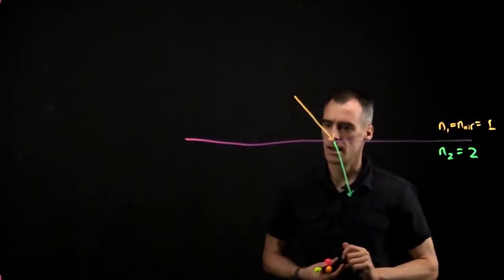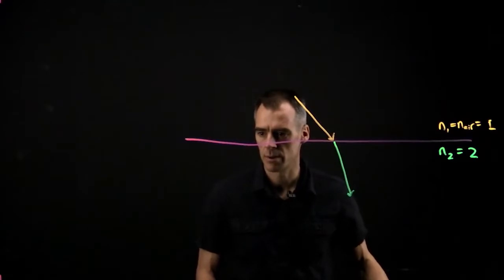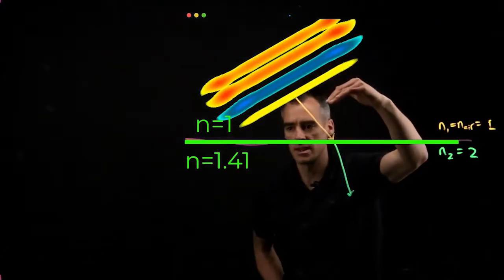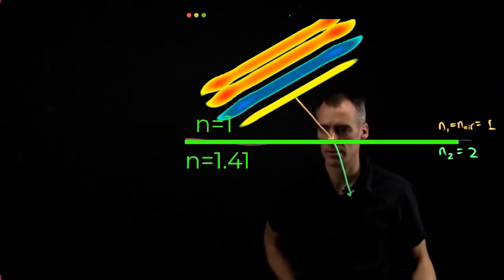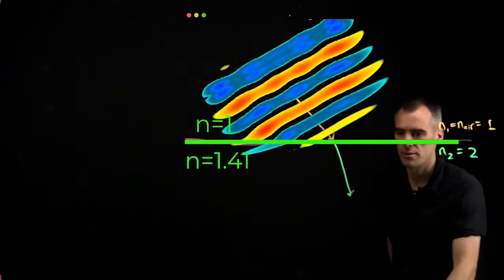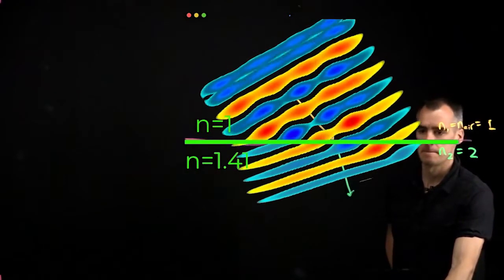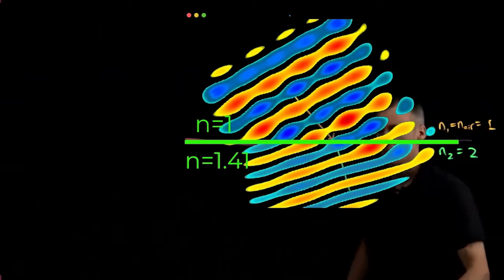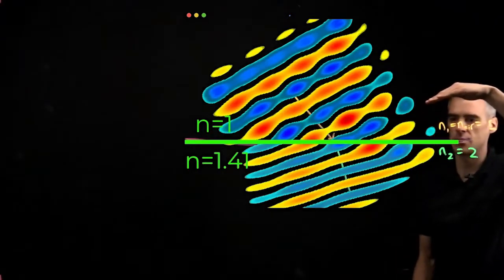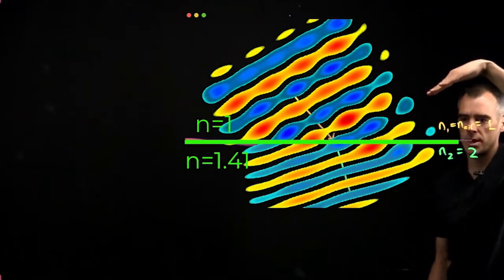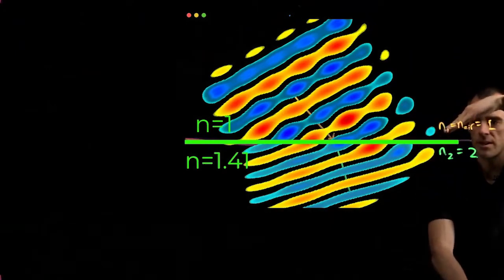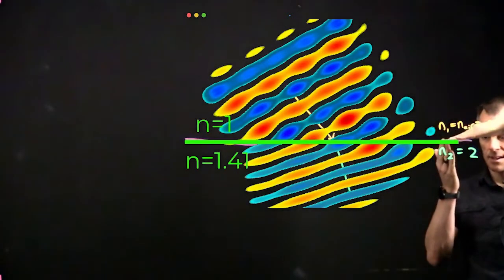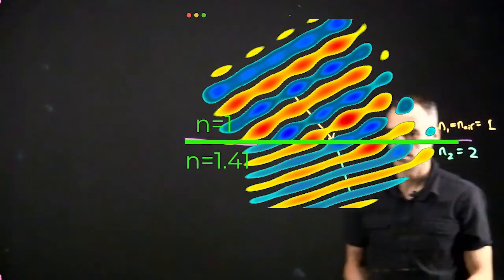Let me bring up this demo quickly. This was a finite difference time domain (FDTD) method, showing plane waves coming in and hitting the interface. Just to remind you: the wave comes in, one side hits the interface first and slows down while the other side keeps going the same speed, so the wavefront tilts — that's why we get this curve.